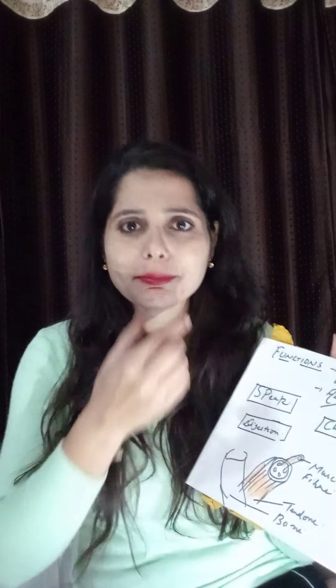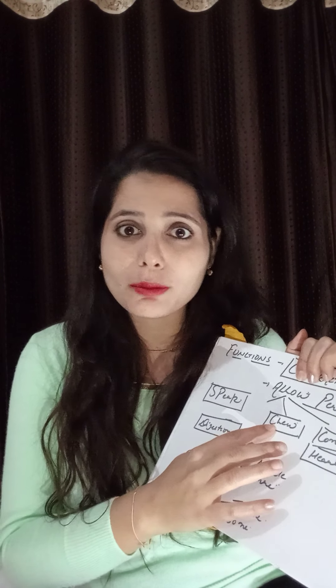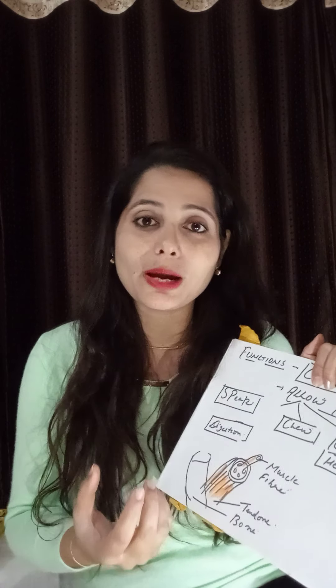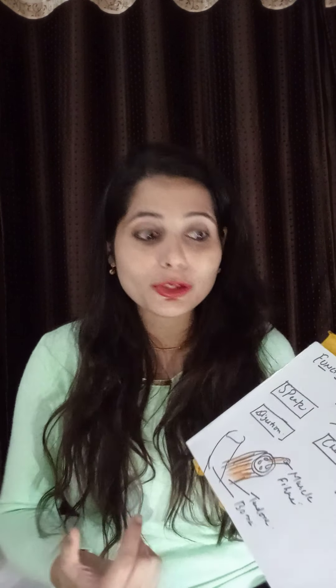Muscles allow the person to speak. When I am talking to you, my facial muscles are helping me speak. When you eat something, muscles help with that too. Muscles control our heartbeat. I already gave you the breathing example — when we contract and relax, we breathe in and breathe out. That is also muscles' contraction and relaxation.